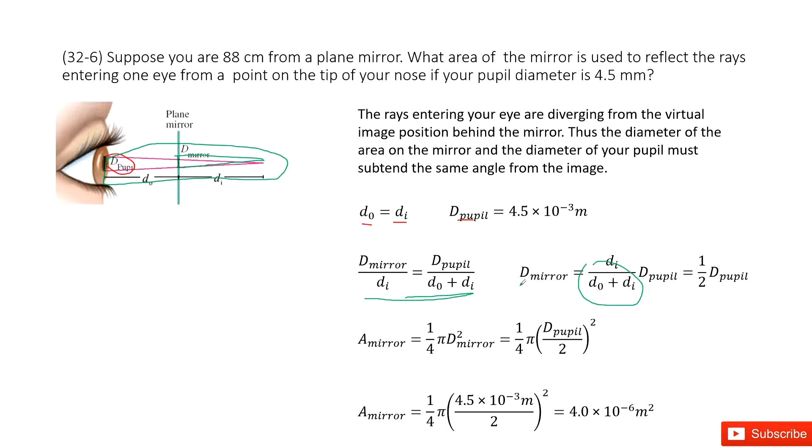Now since we have the equation for D_mirror, we need to find the cross-sectional area for the mirror. So A_mirror should be one-quarter pi D_mirror squared, right? Input the D_mirror inside, we get the equation like this. Now input the quantity for D_pupil, we get the final answer there.